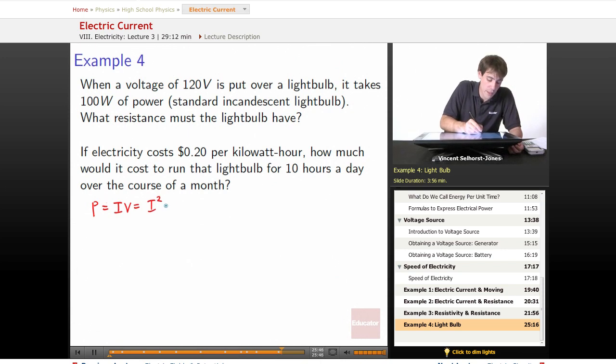which is equal to current squared times resistance, which is equal to the voltage squared over the resistance. So which one of these would be the best choice to pick? Well, we know the voltage, we want to know the resistance, we know the power. So this is the best one to choose.